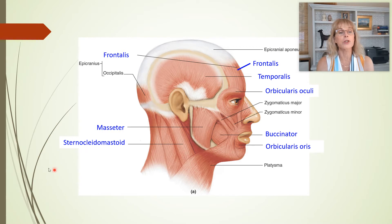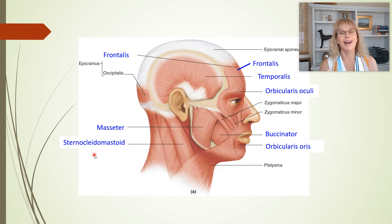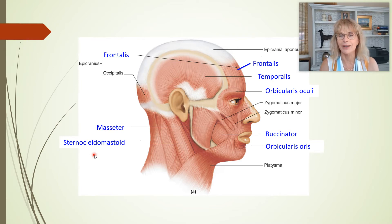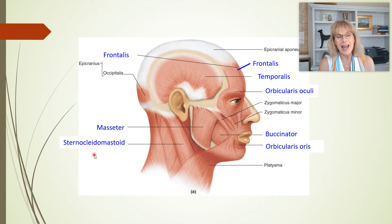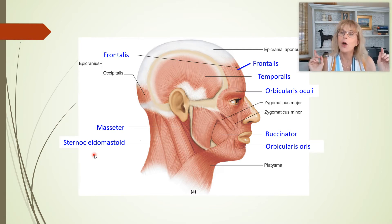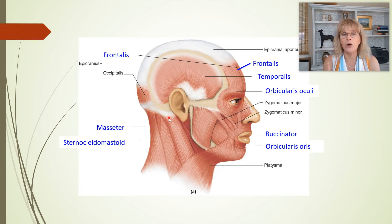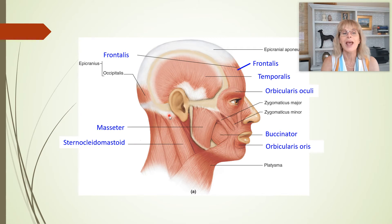Now we have the sternocleidomastoid. The sternocleidomastoid — you're going to find it on my quizzes, guaranteed. Why? Because its name is long and hard to spell, and its name tells you what bones it attaches to. Specifically, this is the mastoid process of the temporal bone, and the sternocleidomastoid is attached to the mastoid process — that's where 'mastoid' comes from.